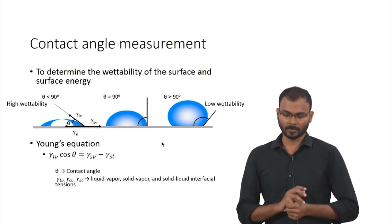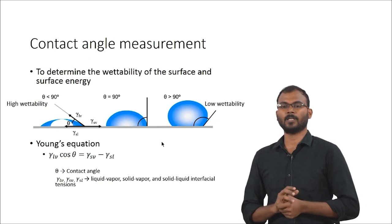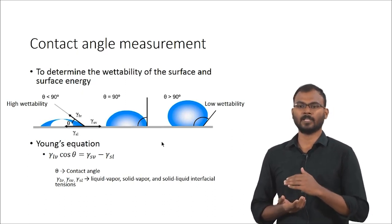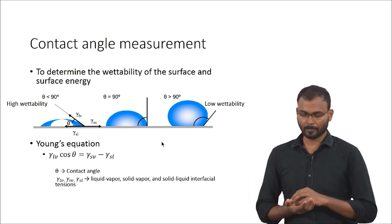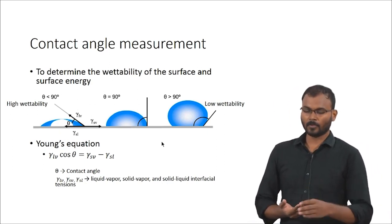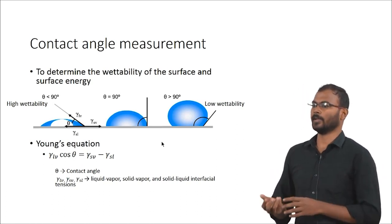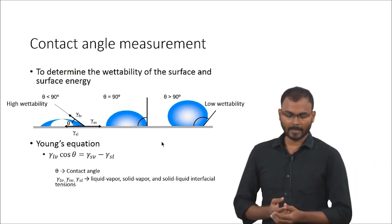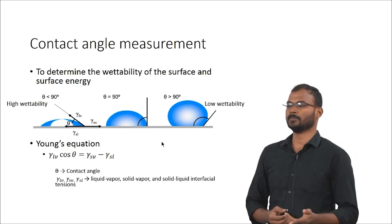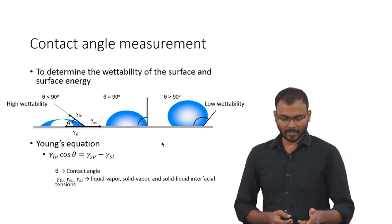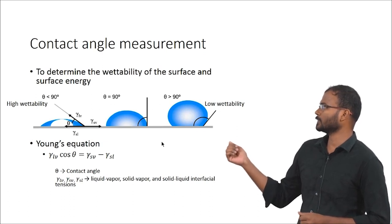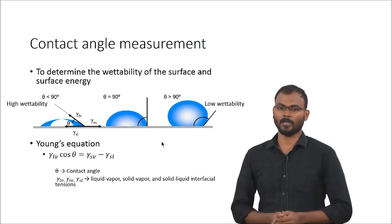Contact angle measurement is used to determine the wettability of the surface and to estimate the surface energy. When a material is introduced, the liquid solution from the host mechanism spreads on the material surface, which primarily affects how proteins and cells are absorbed on the surface. To find out this wettability property — whether the material is hydrophobic or hydrophilic — we use contact angle measurement. The angle between the solid-liquid interface and the liquid interface is the contact angle, given by Young's equation: γ_SL·cosθ = γ_SV − γ_SL.